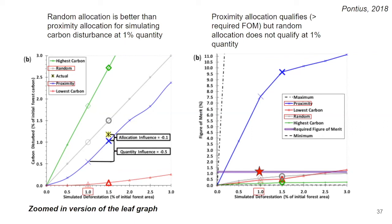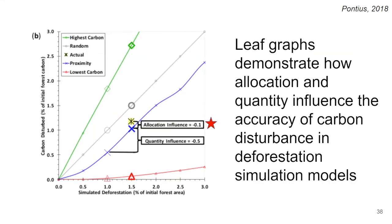However, looking at the right graph where the red star is, the gray random allocation model line falls below the required FOM at the 1% simulated quantity. This difference demonstrates how leaf graphs provide a more nuanced view than purely the FOM criteria, showing how different models perform better at modeling carbon disturbance for a particular quantity. Additionally, the leaf graph demonstrates whether a simulated deforestation risk method has allocation influence or quantity influence in its error for simulating actual carbon disturbance.